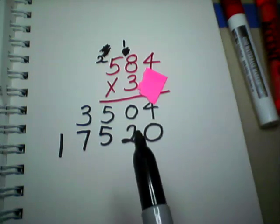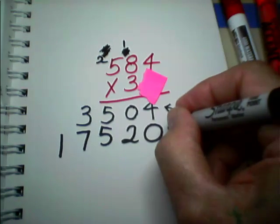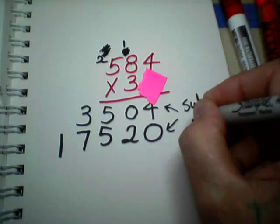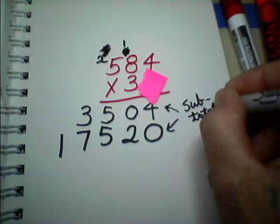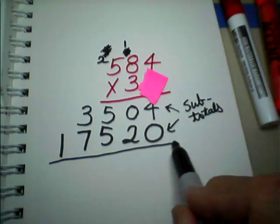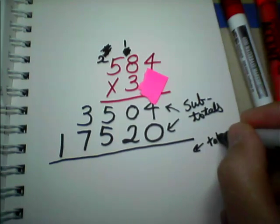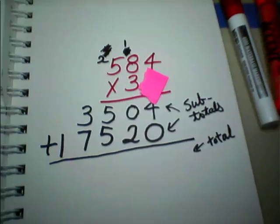So, I'm all done multiplying. And remember, these guys have a name. They're called sub-totals. And sub-totals means that you're not done yet because you have to come up with your total. And so, to get your total, you simply add up your sub-totals.